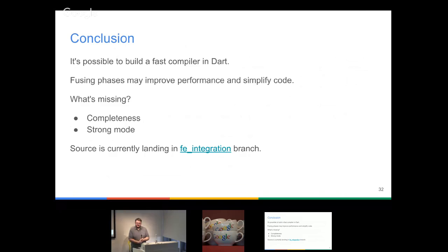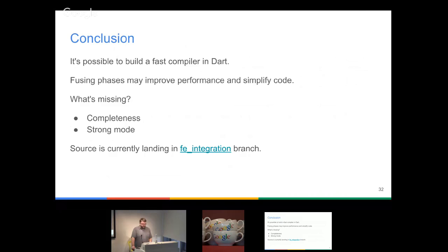My conclusion is that it's definitely possible to build a fast compiler in Dart. Fusing phases may, counter-intuitively, sometimes make the code easier to understand — I end up having one big file with all the stuff related to how I look up and build various things. That's sometimes simpler, though I don't know long-term how hard it'll be to maintain. What's currently missing: not all tests are passing yet, and strong mode needs to be implemented. I've put a link to the branch where I'm currently landing this compiler in the SDK, in the git-on-board repository.